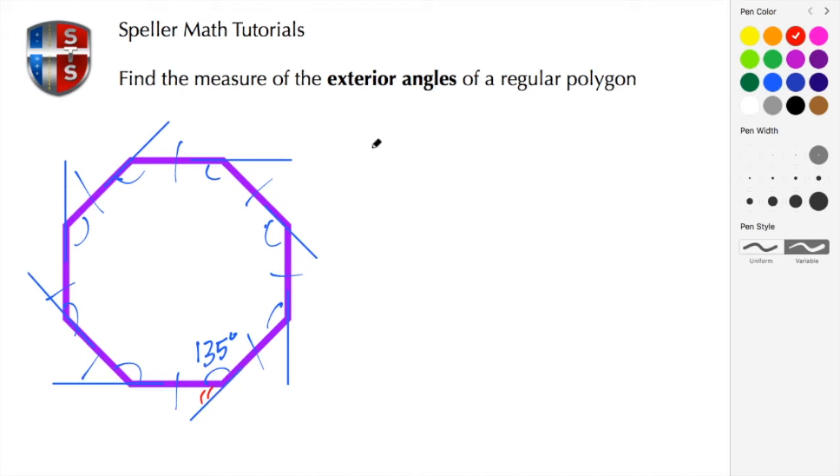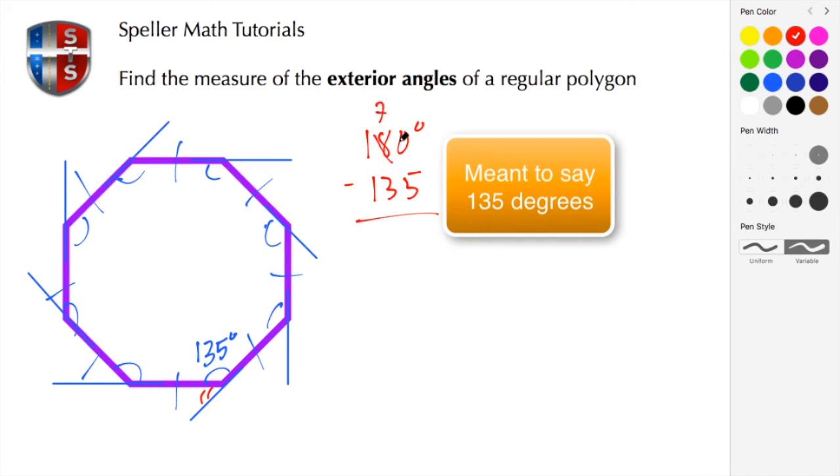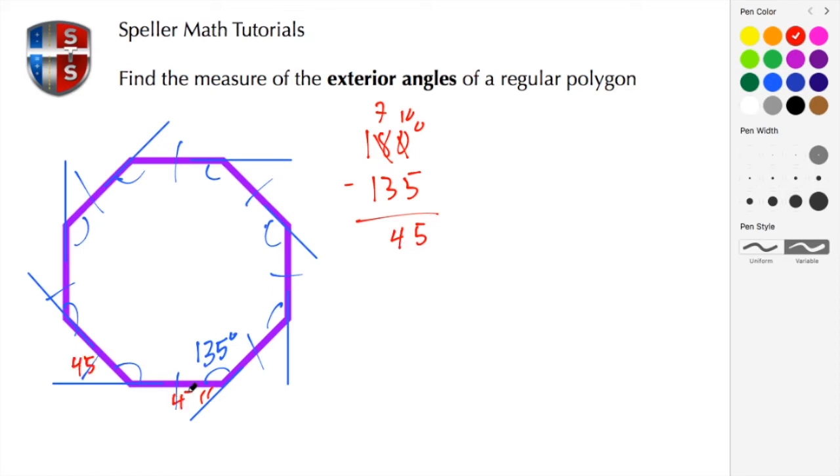So here let's take the amount of 180 degrees and subtract off the angle that we know, which is 135 degrees. Let's just do a quick regrouping here, so we have 10 minus 5 to give me 5 and 7 minus 3 to give me 4. So here we found that each one of these exterior angles is 45 degrees.